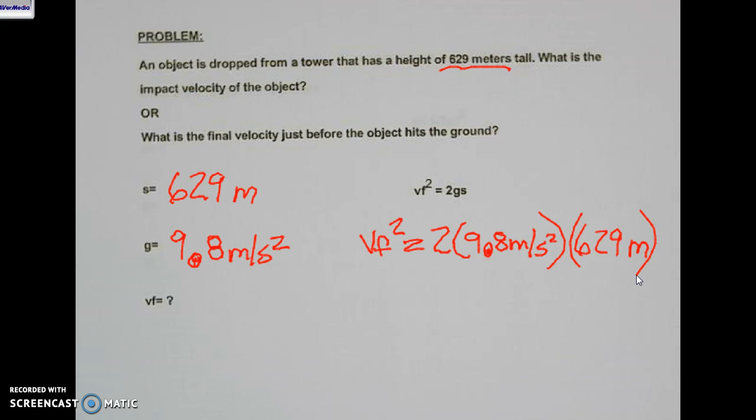Now, let's simplify our numbers. So we're going to take 2 times 9.8 times 629. That comes out to 12,328.4.